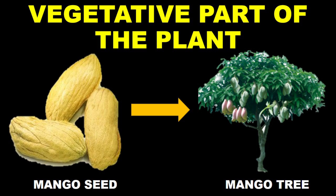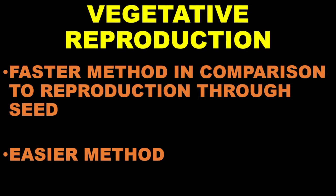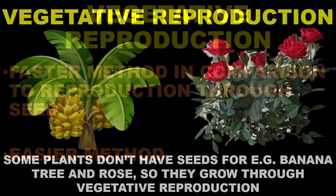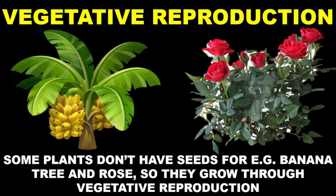When we talk about vegetative reproduction, it is a very fast method and it is a very simple and easy method for increasing the number of plants — it happens very quickly. Another reason it is important is that some plants which don't have seeds, like banana or rose, also grow by the help of vegetative reproduction.